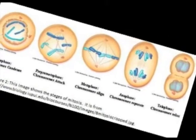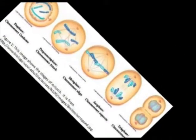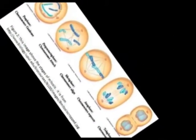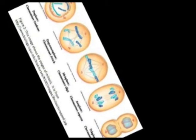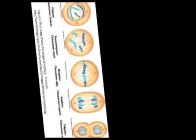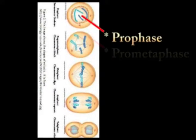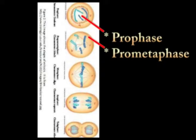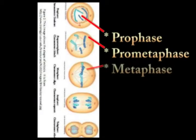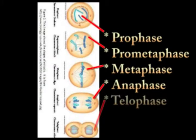Mitosis, although a continuous process, is conventionally divided into five stages: prophase, prometaphase, metaphase, anaphase, and telophase.